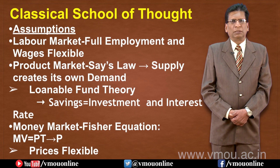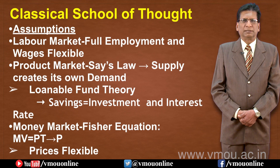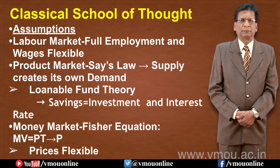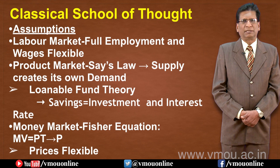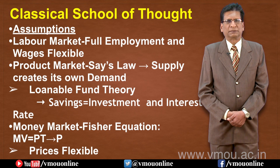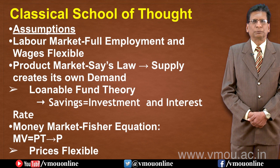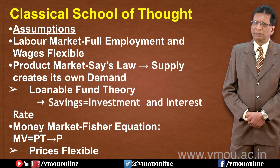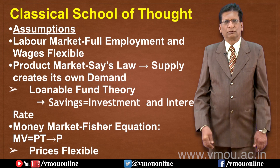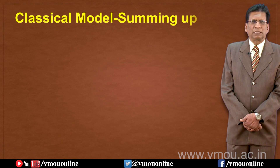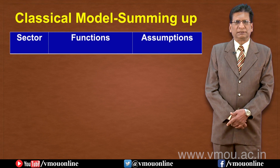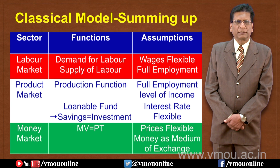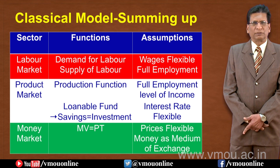The third market is governed by the loanable fund theory, where savings and investment interact to determine the interest rate. The money market, called mudra bazaar, can be described using the Fisher equation: MV equals PT. The classical theory can thus be summarized through three stable markets: the labour market, the product market, and the money market.